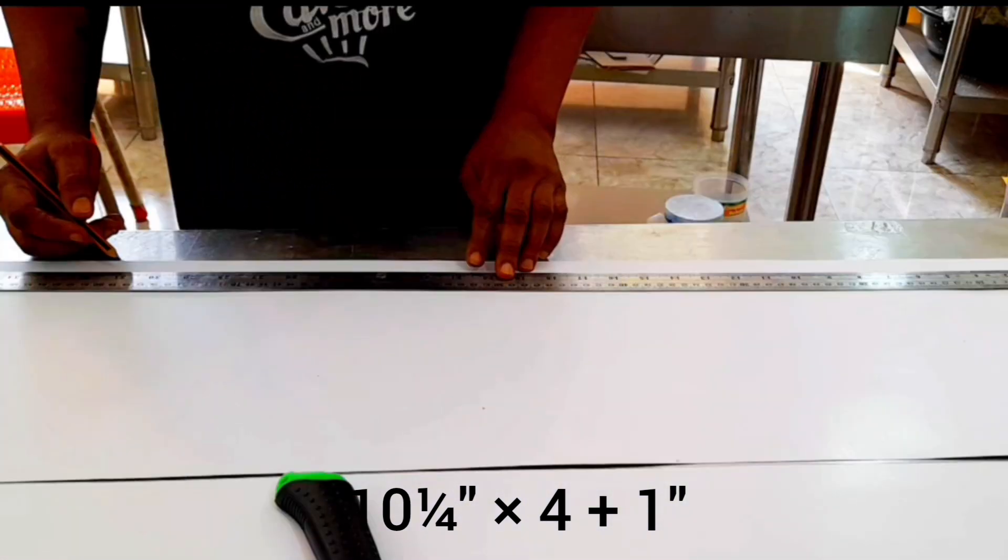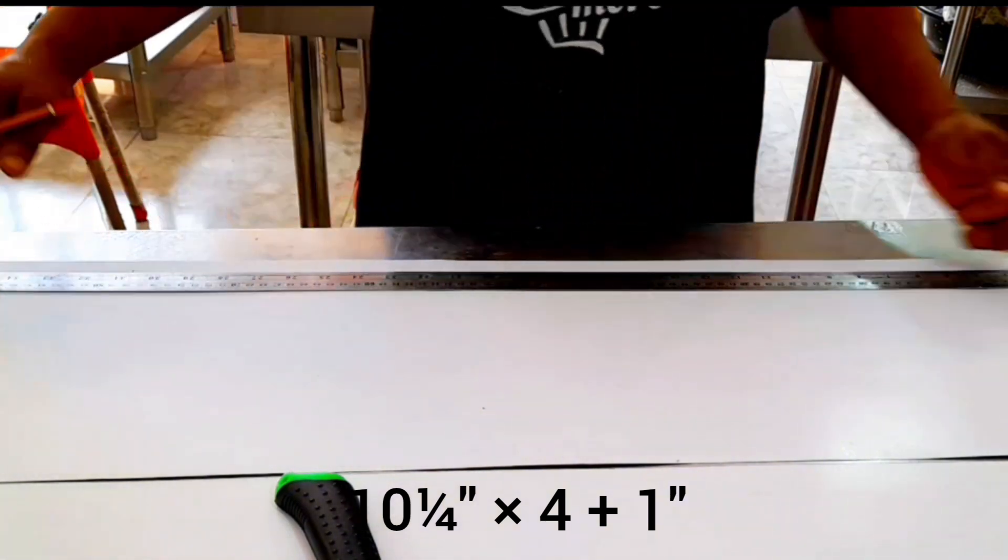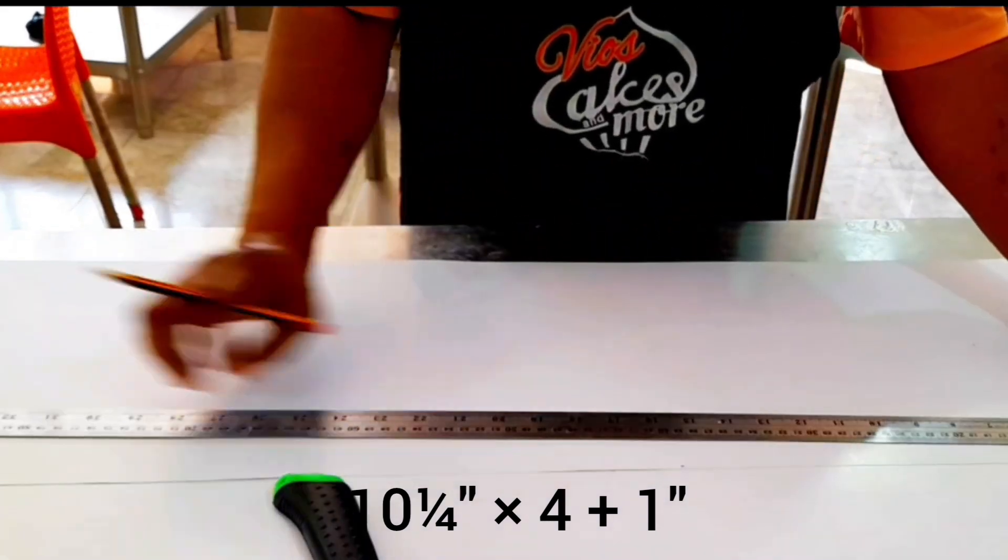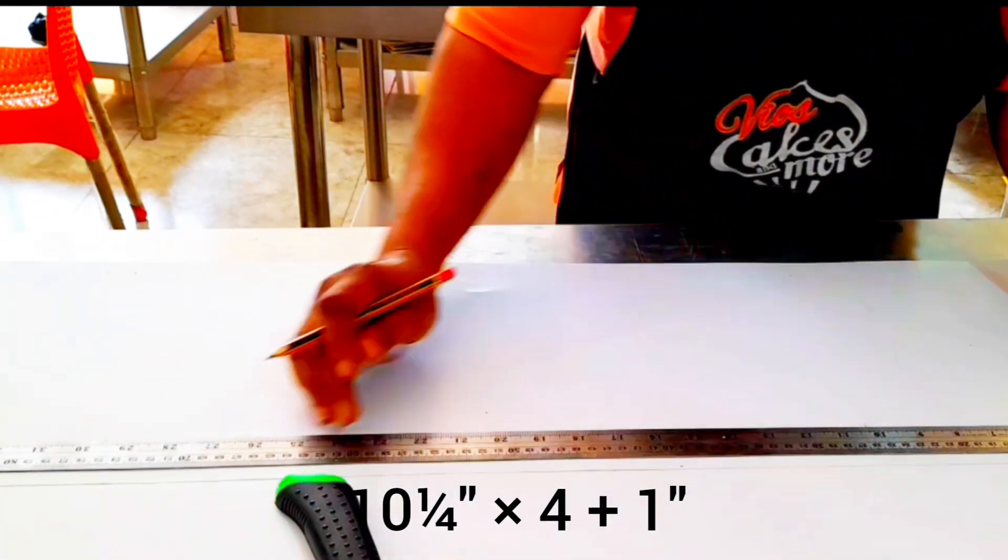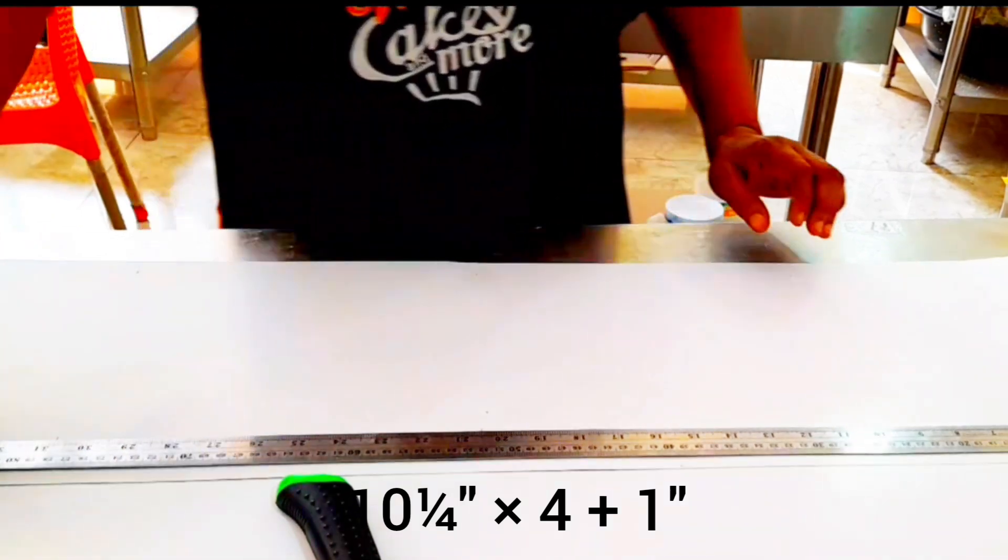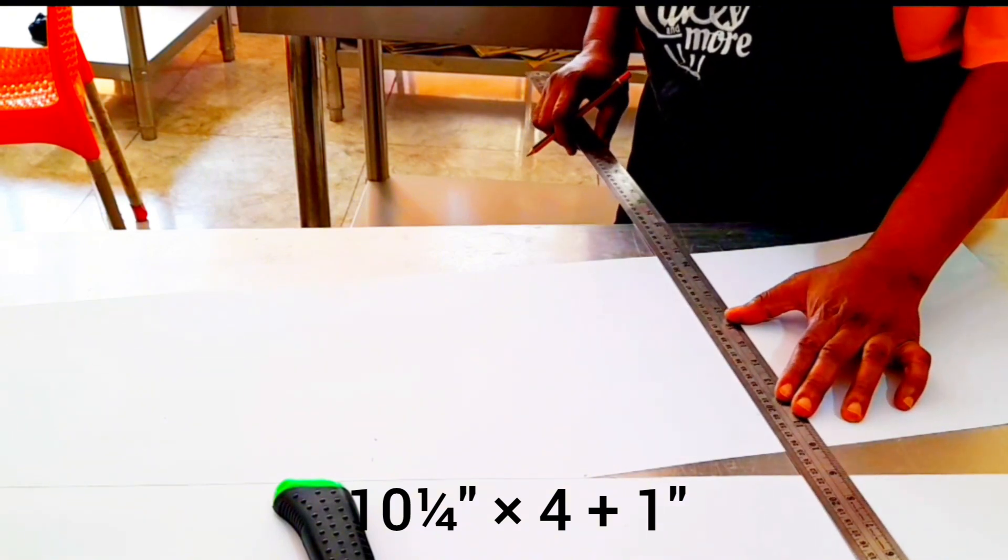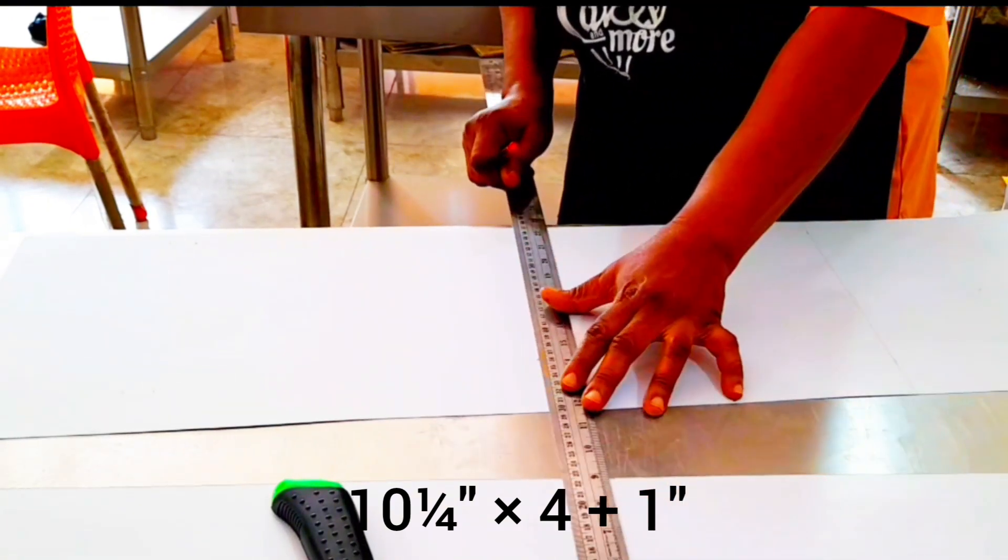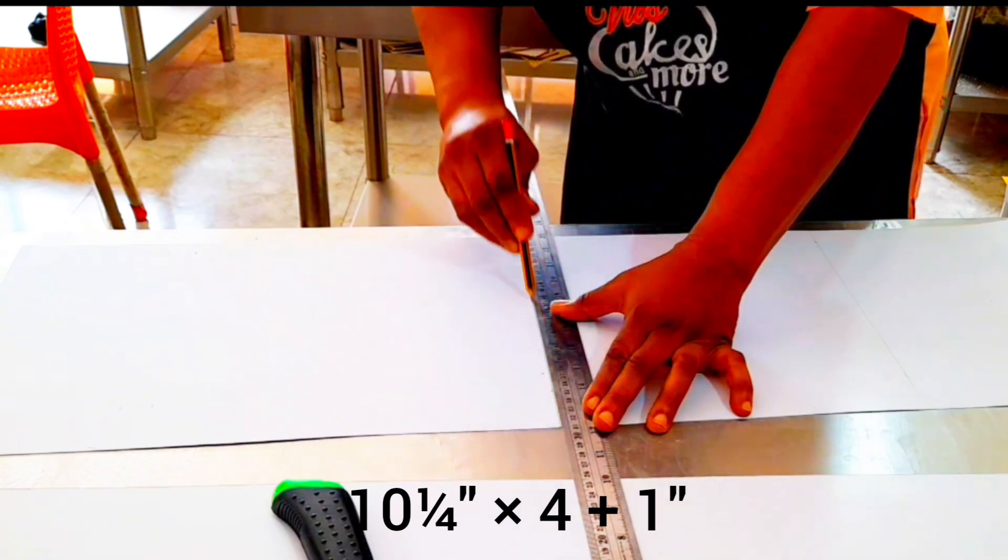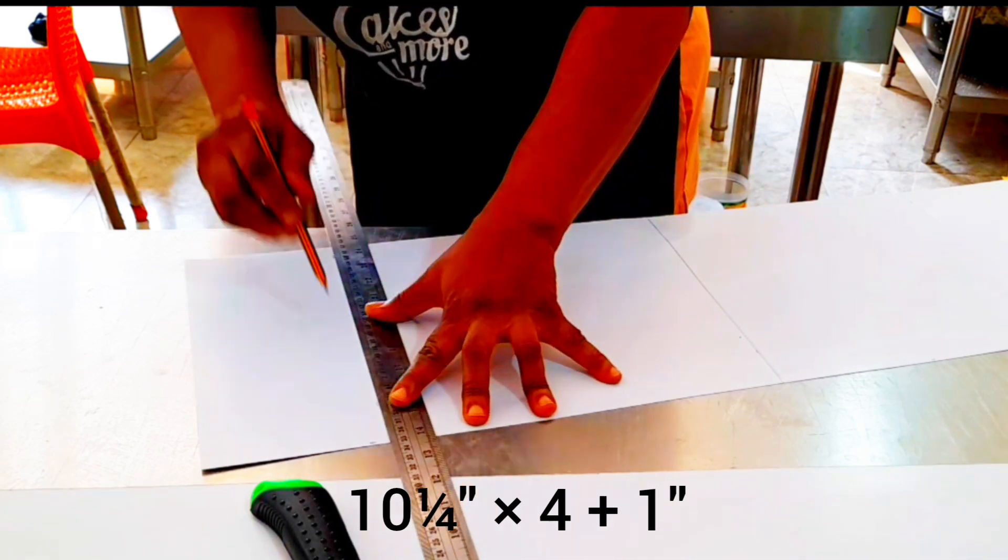So we are now measuring 10 and a quarter, 10 and a quarter, 10 and a quarter. Because my paper is not long enough, I am stopping at 3. But if you are using the FBB card, make sure you go 10 and a quarter times 4. To achieve this, measure down and then measure up. At the end of the total measurement, measure half inch. That half inch is what you will use to join at the end of the paper. After that, you rule across. This time you are not ruling to cut but to get the demarcations right.